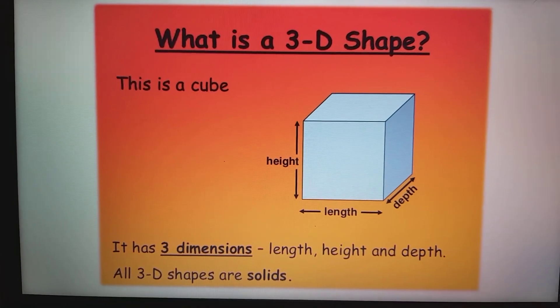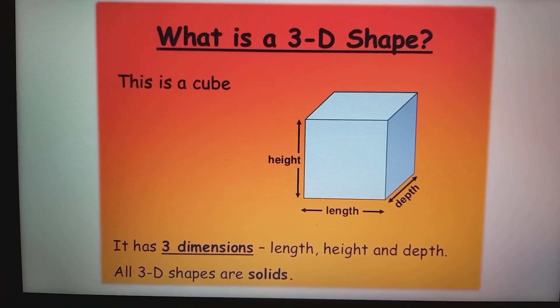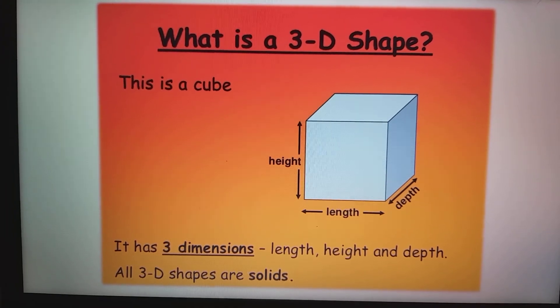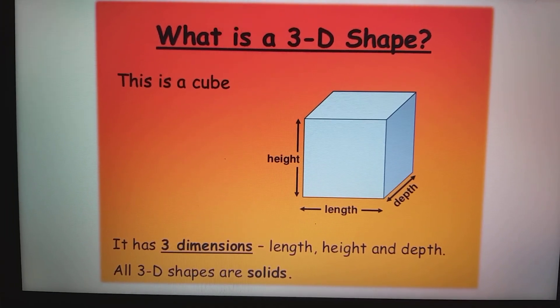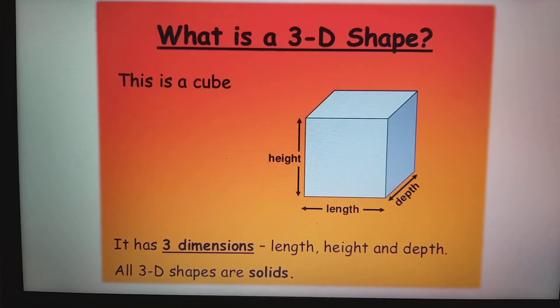So what is a 3D shape? A 3D shape has three dimensions, for example the length, the height, and the depth.